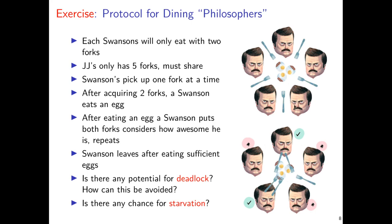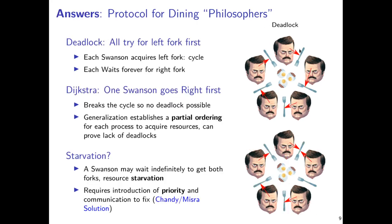An obvious solution is to encode that every Swanson tries to pick up their left fork first. Everyone attempts to pick up their left-hand fork in a clockwise fashion. The obvious problem is that if everyone first picks up their left fork and then looks to their right, they'll find an empty spot. This leads very easily to deadlock — everyone has one fork in hand, isn't releasing it, and there's no way to pick up a second fork. Deadlock is a major danger here, so we need to do something slightly more complex.